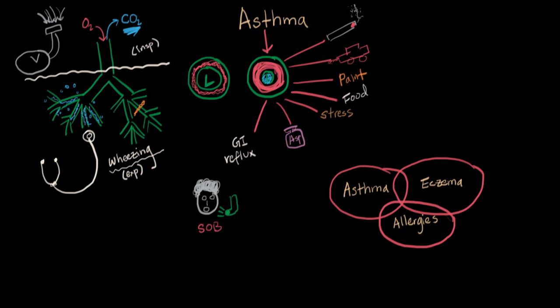So in a nutshell, from a thousand miles above, this is what asthma looks like. A few key words to remember: airway constriction in the small airway causes shortness of breath and sounds like wheezing on a stethoscope.